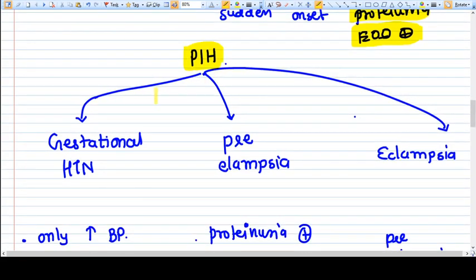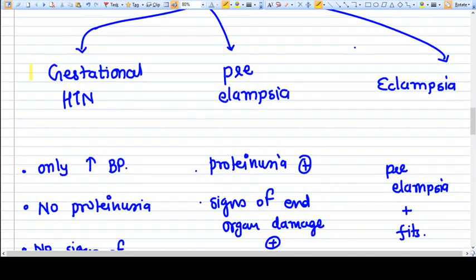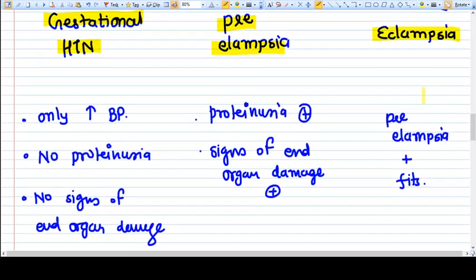When we say PIH, pregnancy induced hypertension, that literally means the hypertension is because of pregnancy. There is something going on in the pathophysiology of the pregnancy that is creating hypertension. PIH is the umbrella word. Under this umbrella we have three different terms: gestational hypertension, preeclampsia, and eclampsia.